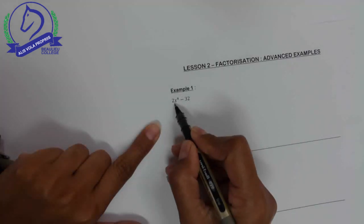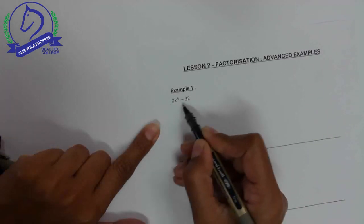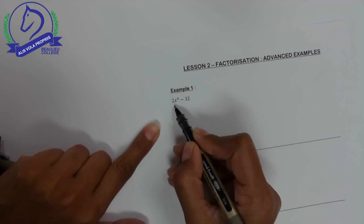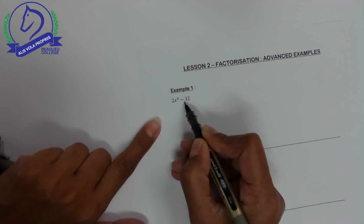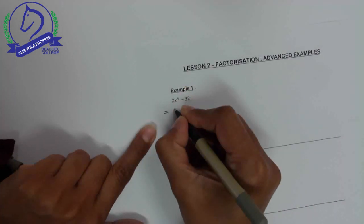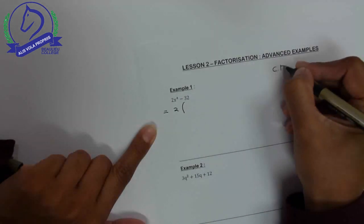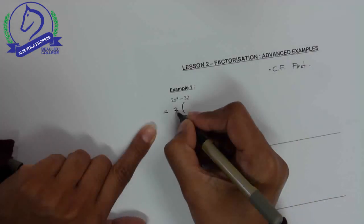Remember common means it has to appear in both terms or all of the terms used in the expression. Even though you have two terms here, let's look: you've got 2x⁴ and 32. It's clear that 2 is a factor of 32, so you can easily take out a common factor of 2. Always look for a common factor first. That's step 1. If I take 2 out as common factor, that leaves me with x to the power 4 minus 16.